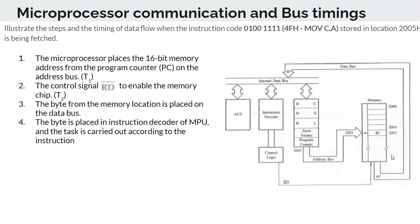When the microprocessor is going to read, first the program counter places the address from which it will read the next instruction — which is 2005. This is a 16-bit address: '2' is represented with 4 bits, '0' with 4 bits, '0' with 4 bits, and '5' with 4 bits — put together 16 bits. Each address is 16-bit, and the data stored is 8-bit. Therefore address lines go from A0 to A15.